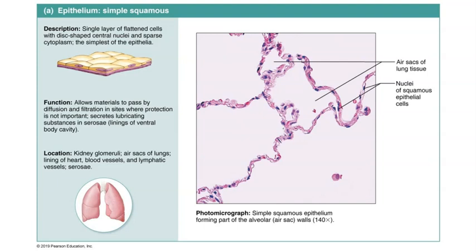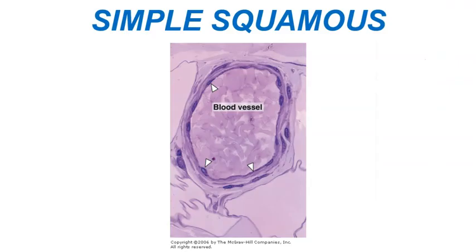Simple squamous epithelium is also found lining the inner walls of the heart and blood vessels. The flat shape of the cells helps make the inner walls of those structures smooth, so that blood can flow without interruption and without turbulence. Here is an image showing the simple squamous epithelium lining blood vessel walls, indicated by the white arrowheads.